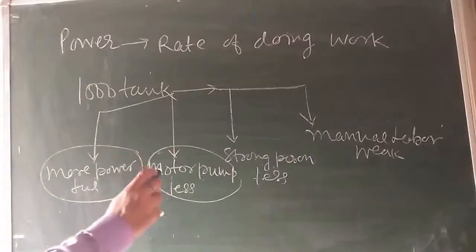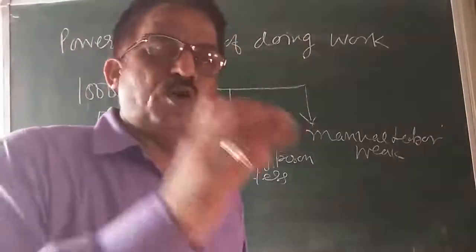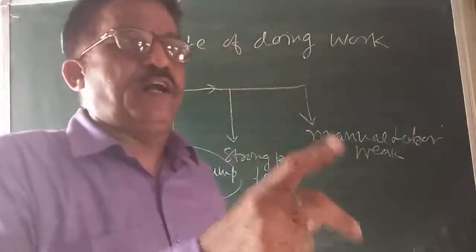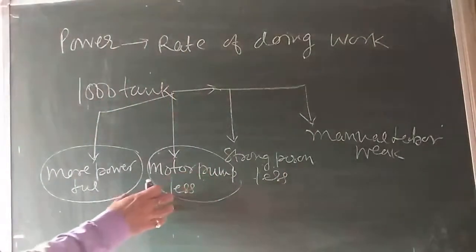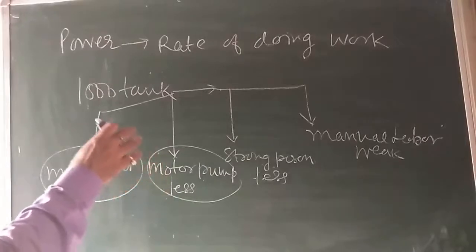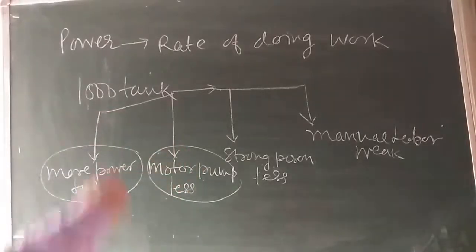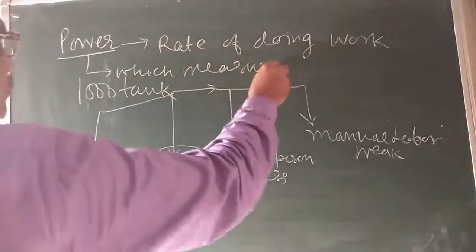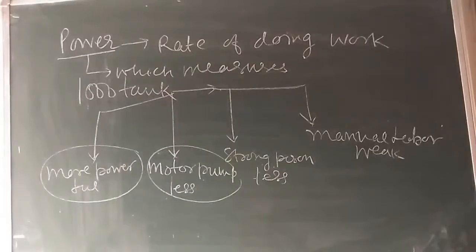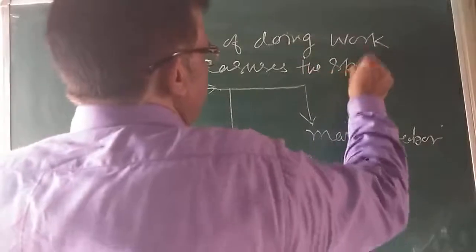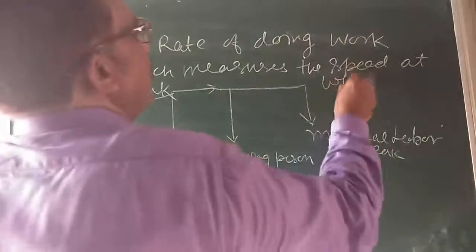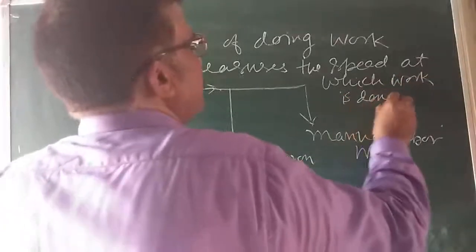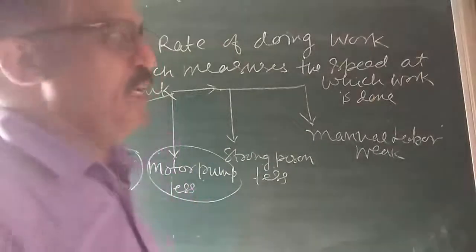Thus, in many cases when work is done, we are not interested only in the total amount of work done, but my interest is how much time it takes to complete that work. So we have to use the term power, which measures the speed at which work is done. That is important — that will be measured as power.